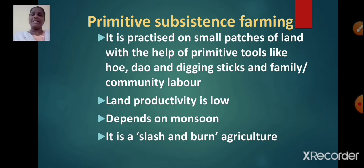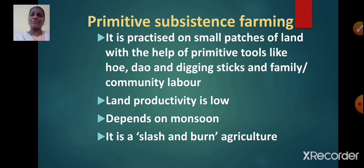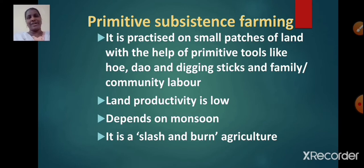Land productivity is low. Do you know why land productivity is low in primitive subsistence farming? Because farmers don't use fertilizers or any other modern inputs. Hence, land productivity is low in primitive subsistence farming. This type of farming depends on monsoon.